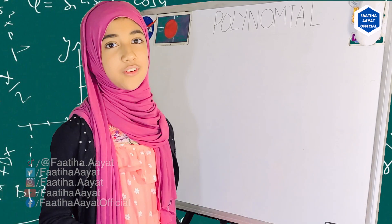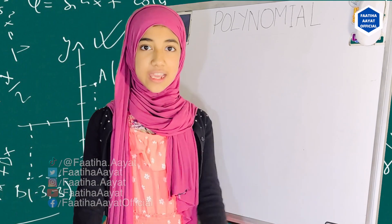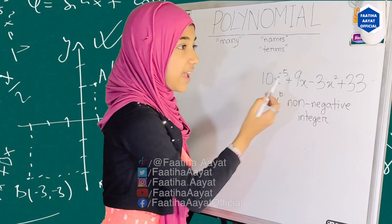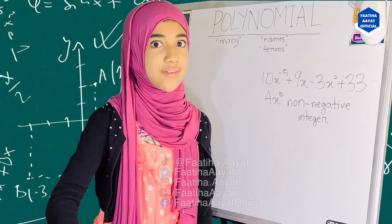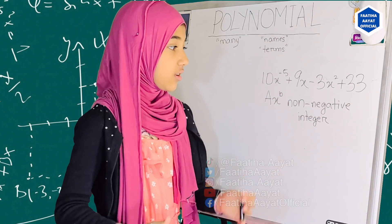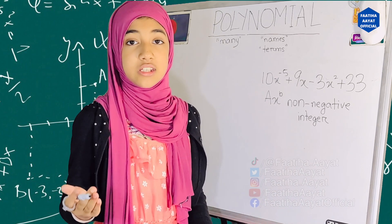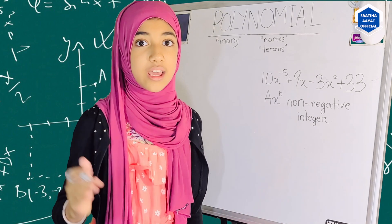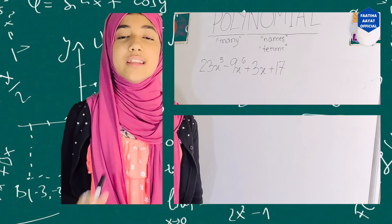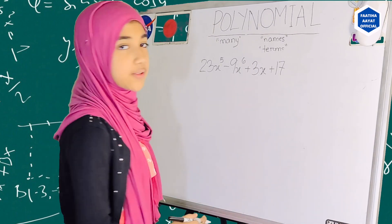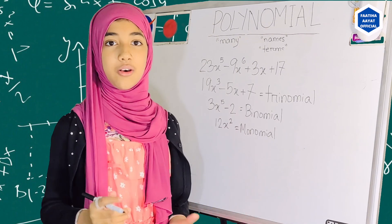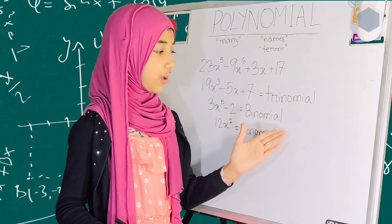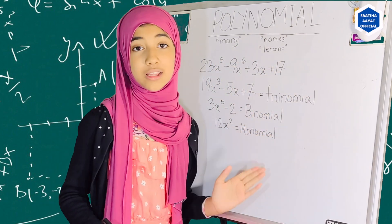Assalamu alaikum dear viewers, today I will show you what polynomials are. You can see that it has minus five — minus five is not a positive integer, it's a negative integer. It has to be a non-negative integer. Now I hope you all learned what polynomial, trinomial, binomial, and monomials are.